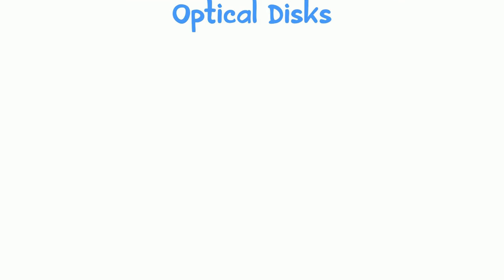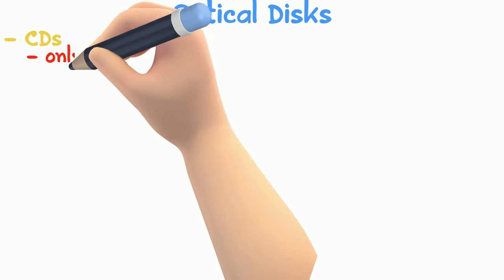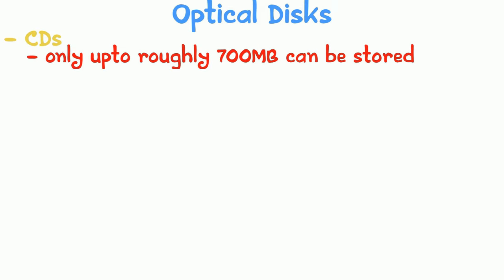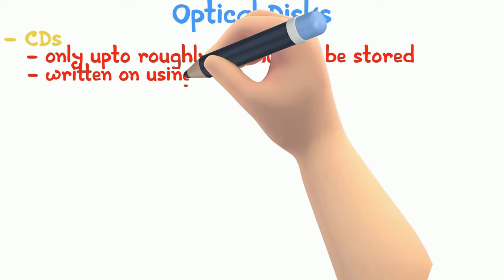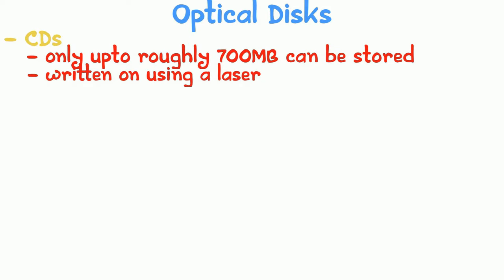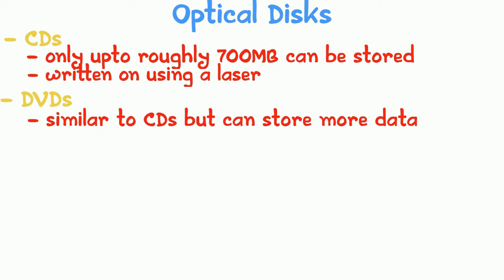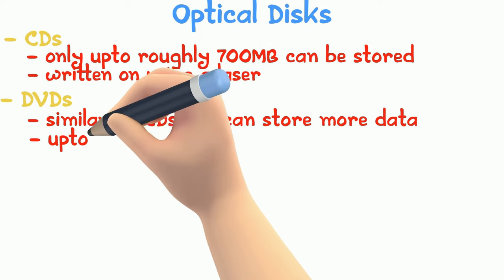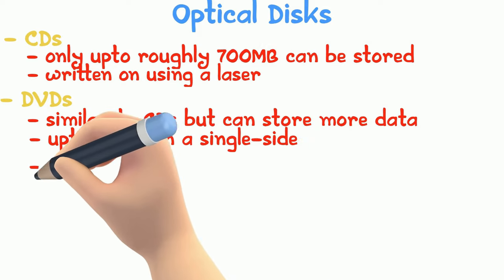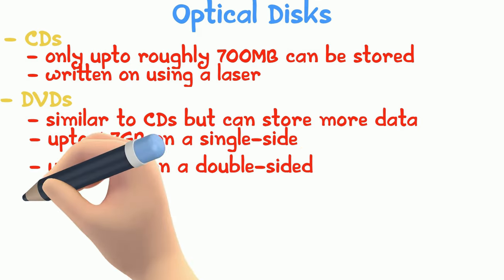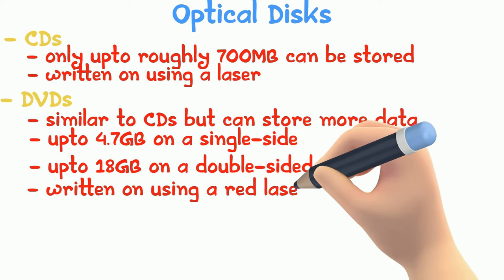There are three main types of optical disks. CDs are the oldest method, storing up to roughly 700 MB, written using a laser. DVDs are similar to CDs but can store much more: up to 4.7 GB on a single-sided DVD and 18 GB on a double-sided DVD, written using a red laser light.